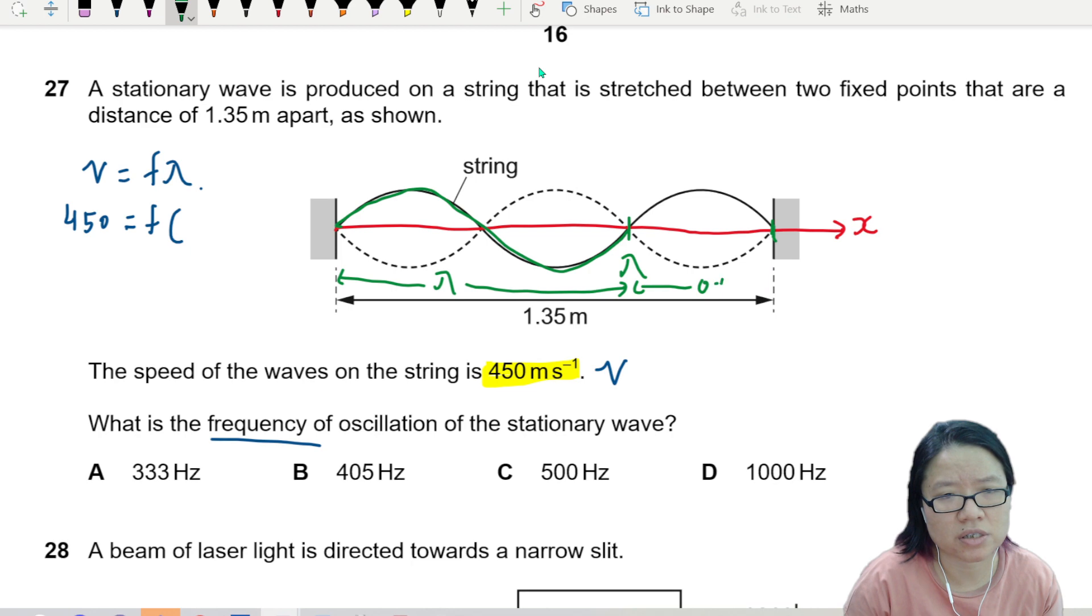And then here to here is 0.5 lambda, so 1.35 is equal to 1.5 lambda. So lambda is 1.35 over 1.5.